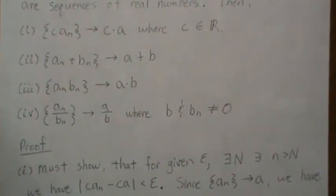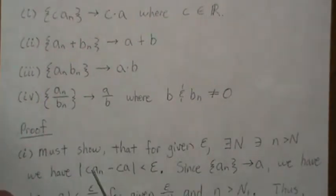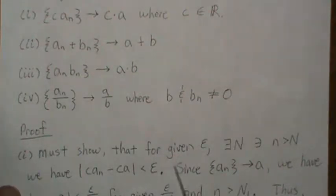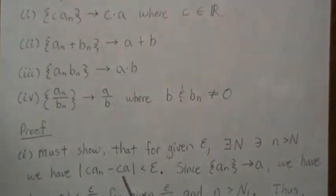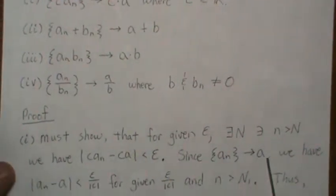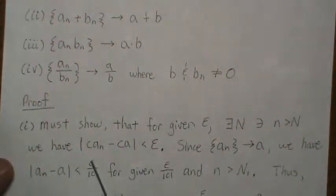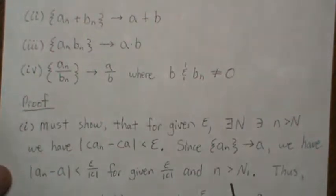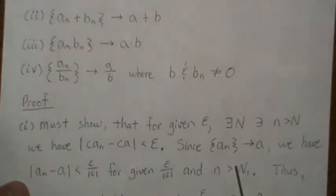For part one, we must show that for a given epsilon, there exists an N such that for all n greater than this N, we have that the difference between our sequence and our limit is less than epsilon. Epsilon can be any positive number — it can be really, really small — which says that these get really close. Since epsilon is arbitrary, that means they are equal. So since An is a convergent sequence to A, we have that |An − A| is less than epsilon over the absolute value of C, for a given epsilon over C and N greater than some N1 that makes it true, because it's a convergent sequence.